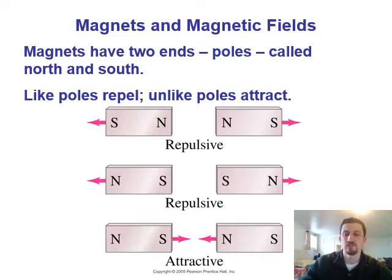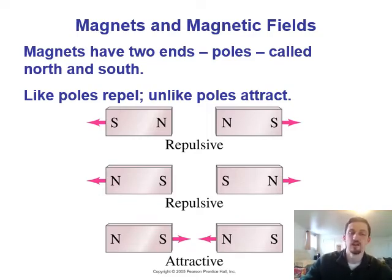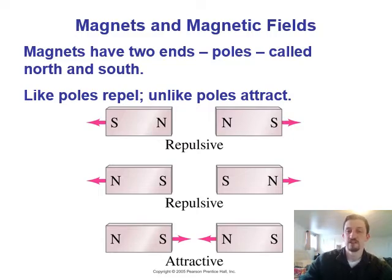This unit is going to be magnetism, and we're just going to start off by talking about some magnets and magnetic fields. Some of this might be review for you guys — you might know a little bit about magnets already. The first thing is that magnets always have two ends or two poles: north and south. The second thing is that like poles repel and unlike poles attract. This is actually the same rule we had for charges — similar repel, opposites attract — so hopefully that makes it a little easier.